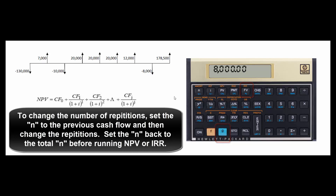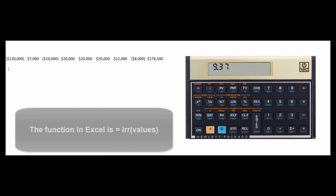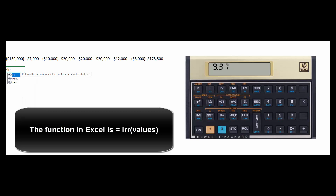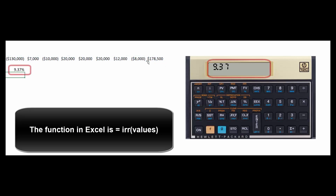Let's check our work using Excel. First, let's verify the IRR calculation — there's nothing tricky about that. In Excel, it's equals IRR, then you designate the values, close the parentheses, and there's our 9.37%.